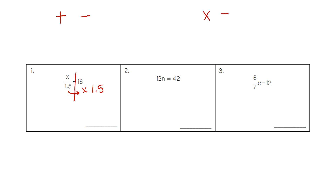Multiplying and dividing are opposites. So on our calculator, we multiply 16 times 1.5, and we get the value 24.